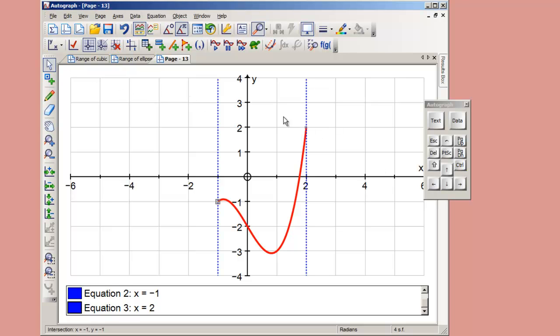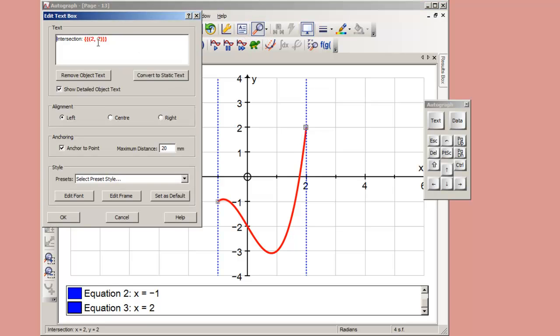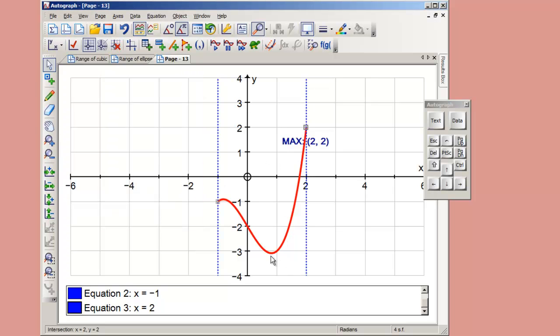What's this one going to be? Well, it's (2, 2), but we can see what the text box gives us, and we'll call that the maximum.